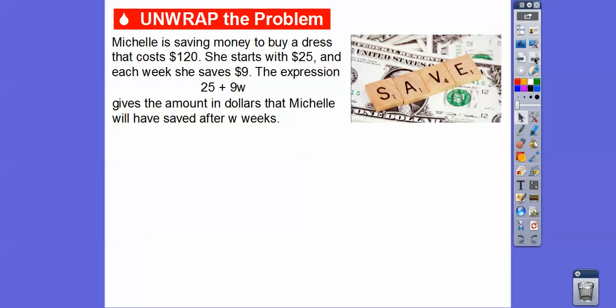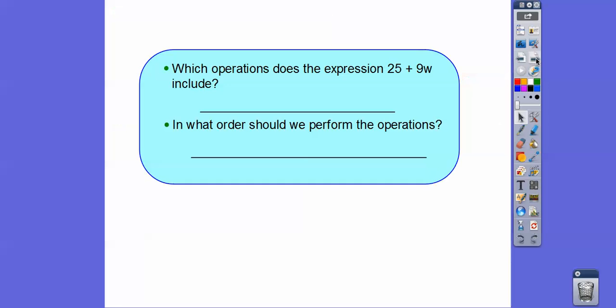Michelle is saving money to buy a dress that costs $120. She starts with $25 and each week she saves $9. So the expression 25 plus 9w, where w stands for weeks, gives the amount that Michelle will save after w weeks.